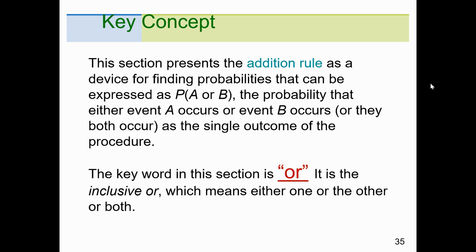In this section, the key word is 'or,' which is the inclusive or — meaning either one, or the other, or both. With the multiplication rule, we had to think about whether events were dependent or independent. With 'or' problems, we need to worry about whether events are mutually exclusive, meaning they cannot happen at the same time — also called disjoint, meaning there's no overlap.